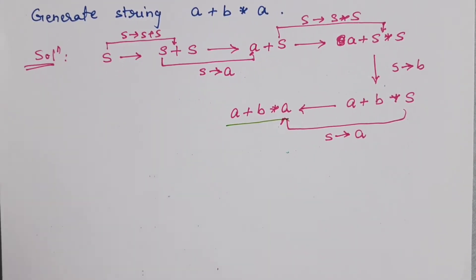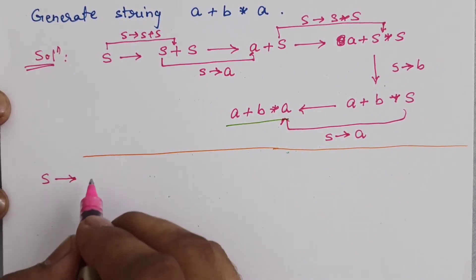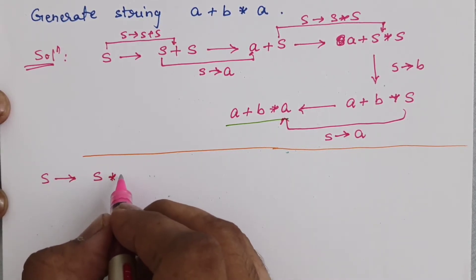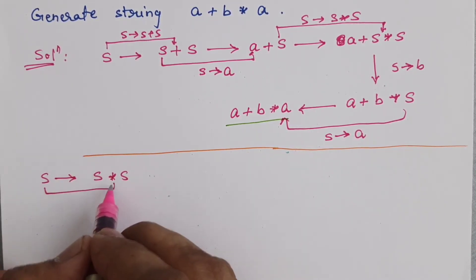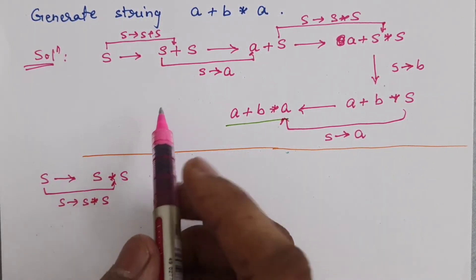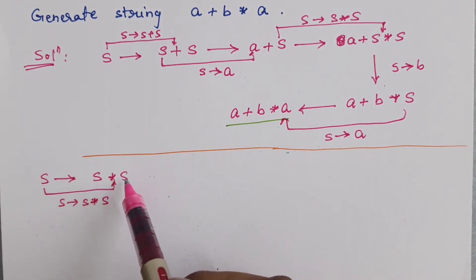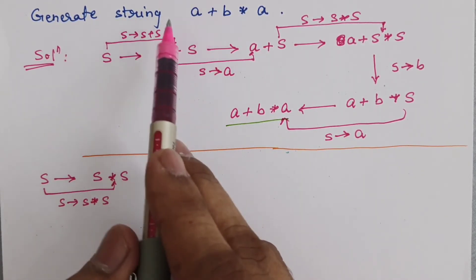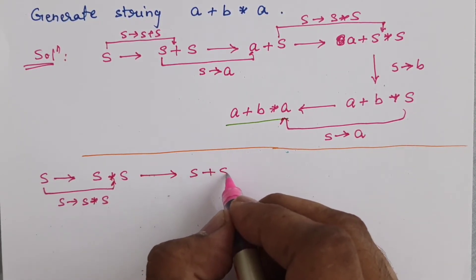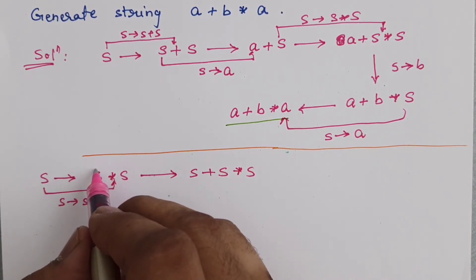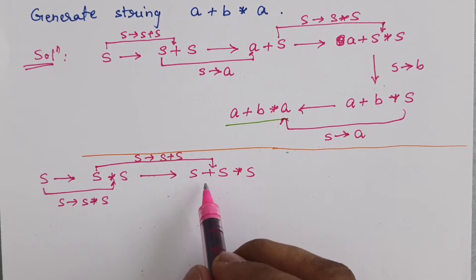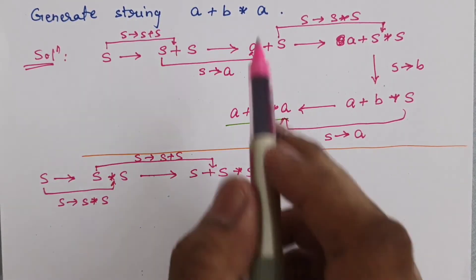Starting from the starting symbol S again, now I am trying to generate b*a first. So I use S → S*S. The production rule used is S → S*S. But if I convert the left S directly to b, I will not be able to generate the a+b part. So first I convert that left S using S → S+S, giving S+S*S.